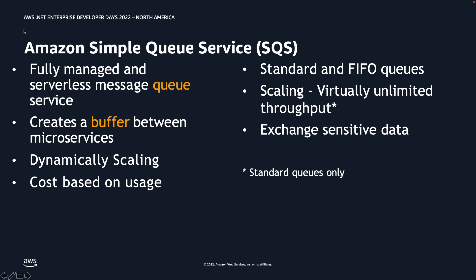With SQS, you get two different types of queues: the first is standard, and the second is first-in, first-out FIFO queues. Standard queues offer virtually unlimited throughput. You also have the option to exchange sensitive data, taking advantage of other AWS platform services to encrypt and decrypt it.